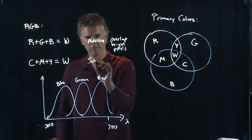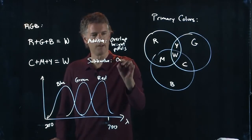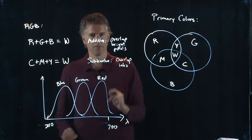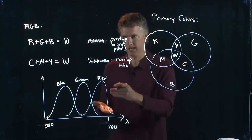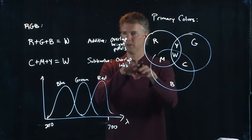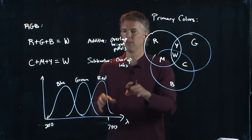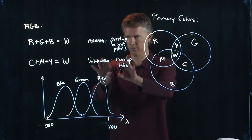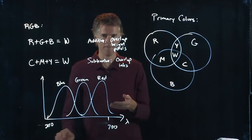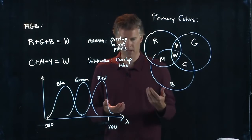But subtractive is when you overlap inks. So if I take red paint and green paint and blue paint, and I put them all on top of each other, I don't get white. I get black. Those are subtractive colors. And because the paint is red, that means it absorbs everything except red.